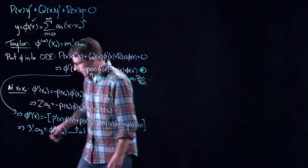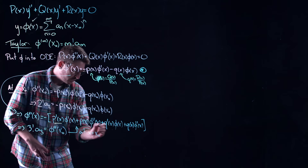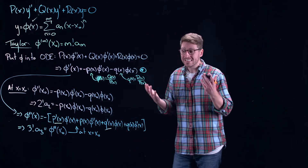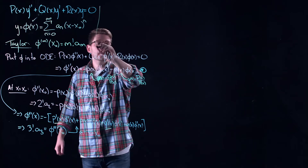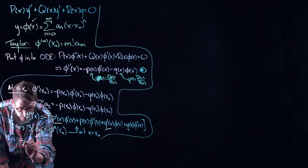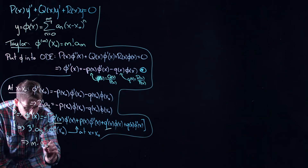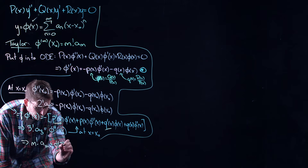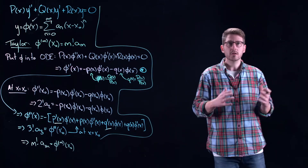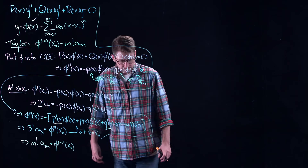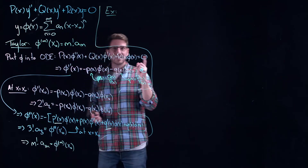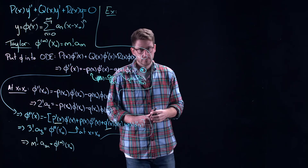What's crucial here is that I need to be able to take derivatives of p and q without introducing any issues. So I can ask: is it enough that p and q are infinitely differentiable? Because if I want to continue, I just take another derivative, giving m!·aₘ = φ^(m)(x₀) for each m. So is infinite differentiability of p and q sufficient?